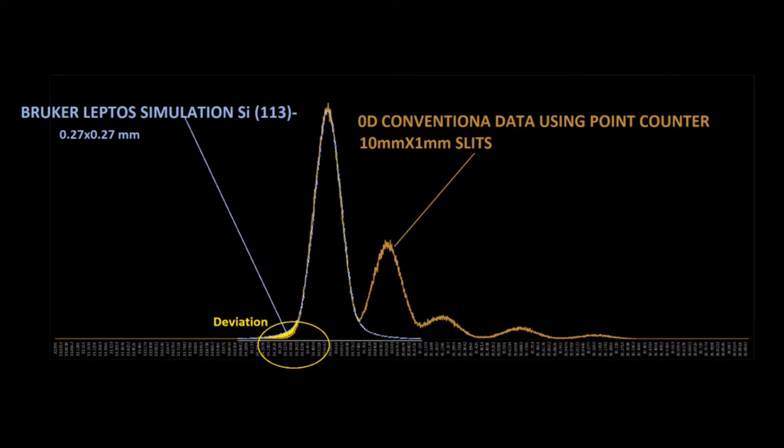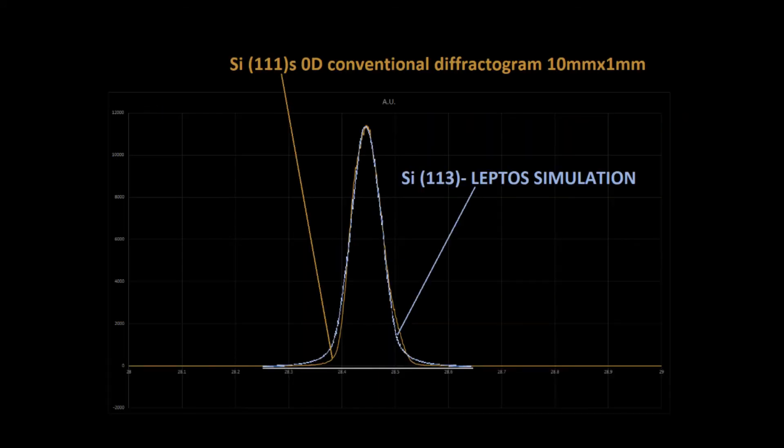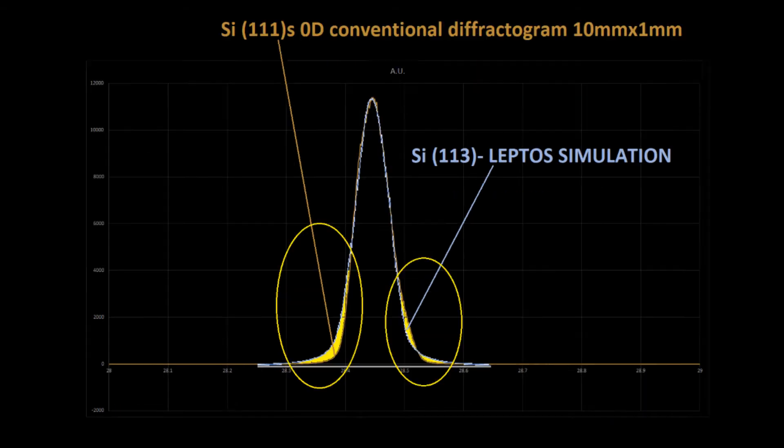The Bruker LEPTOS generated instrument profile is a much better match to our sample profiles than a Gaussian.